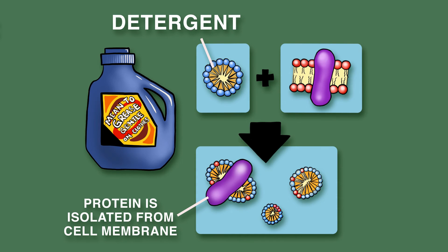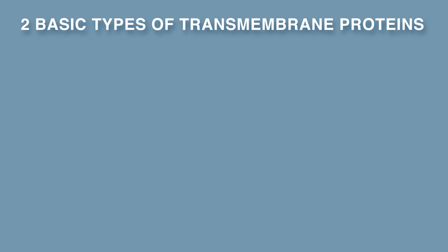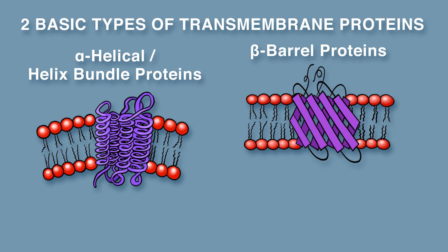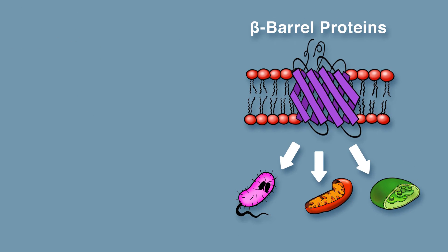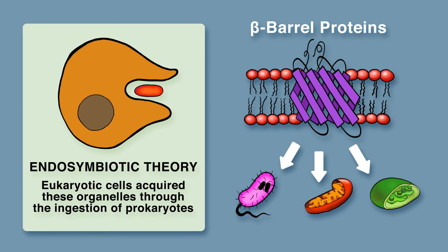To isolate transmembrane proteins, you need to add detergent, which is amphipathic and will disrupt the lipid bilayer. There are two basic types of transmembrane proteins: alpha helical proteins and beta-barrel proteins. While helix bundle proteins are found in all types of biological membranes, beta-barrel proteins are only found in the outer membranes of gram-negative bacteria, mitochondria, and chloroplasts — evidence that contributes to the endosymbiotic theory, in which eukaryotic cells acquired these organelles through the ingestion of prokaryotes.